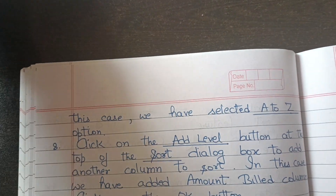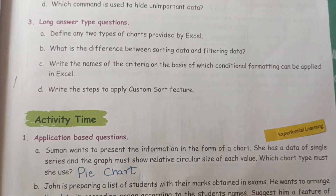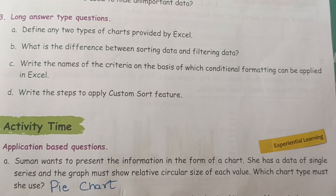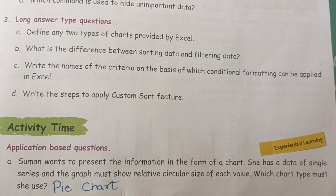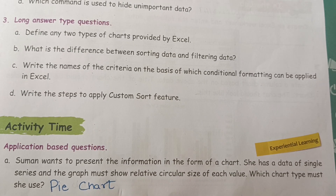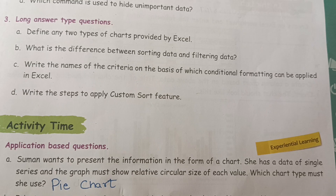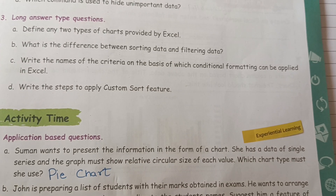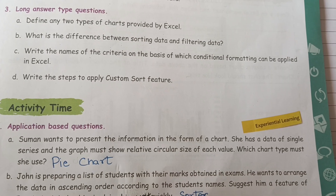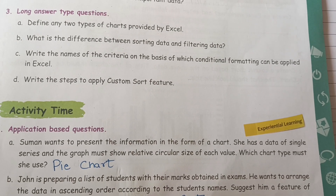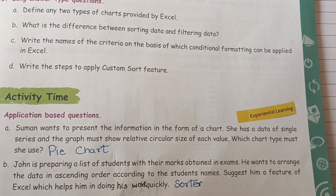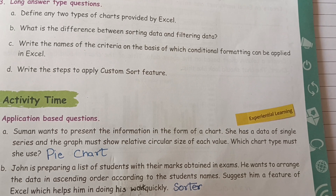So these were the question answers. Now we come to the activity part. Sooman wants to present information in the form of a chart. She has data of a single series and the graph must show the relative circular size of each value — she should use a pie chart. Next, John is preparing a list of students with their marks obtained in exams and wants to arrange the data in ascending order according to the students' names — the suggested feature of Excel is sort.